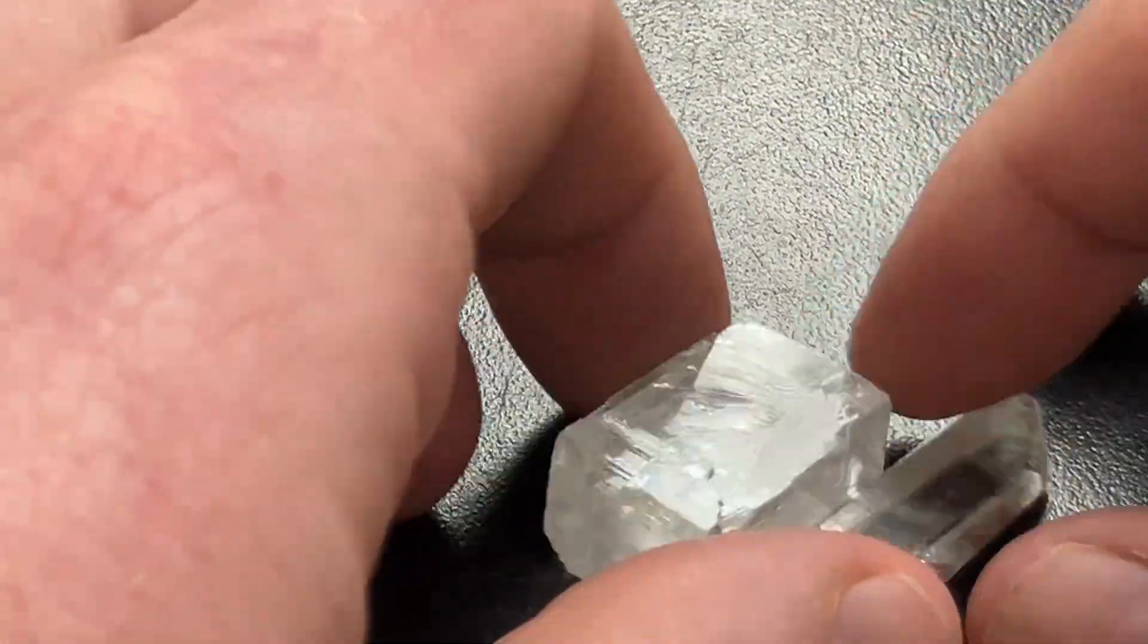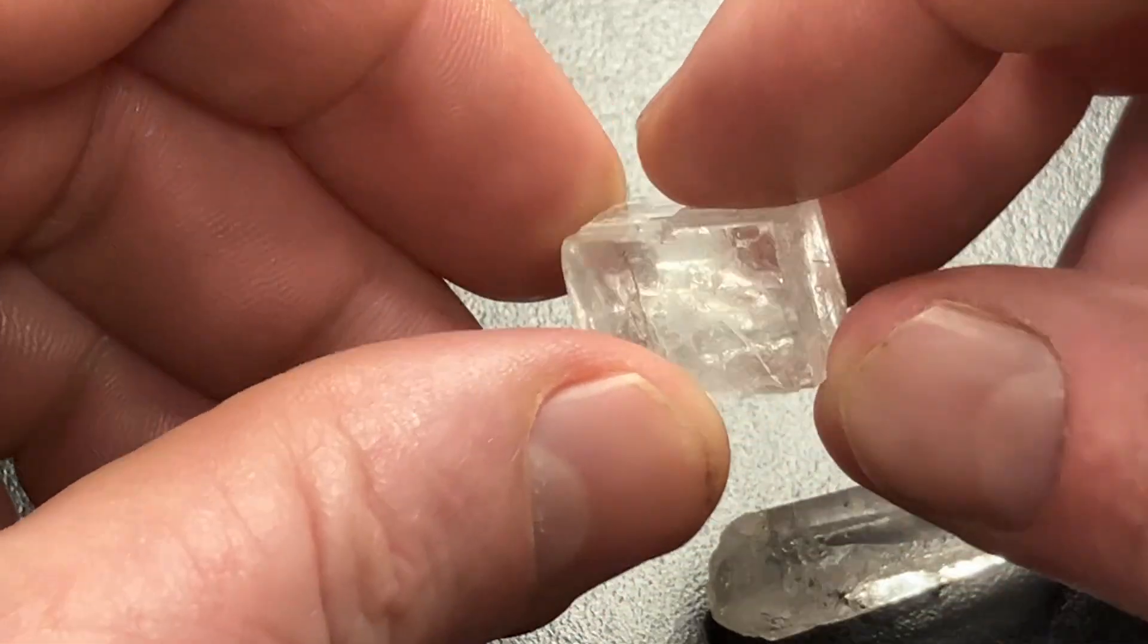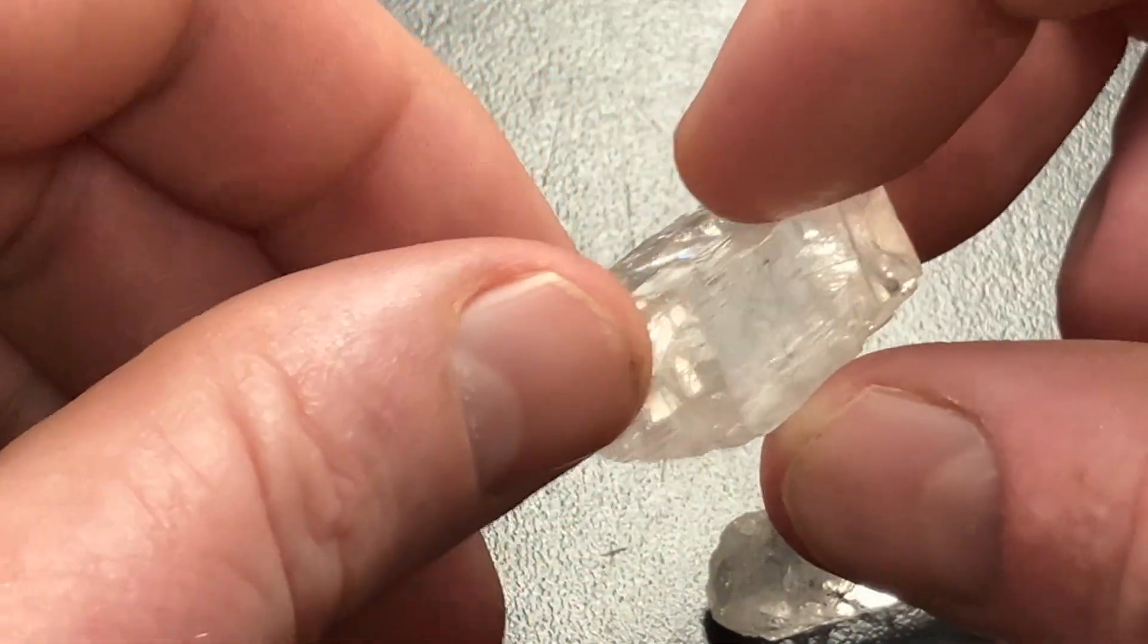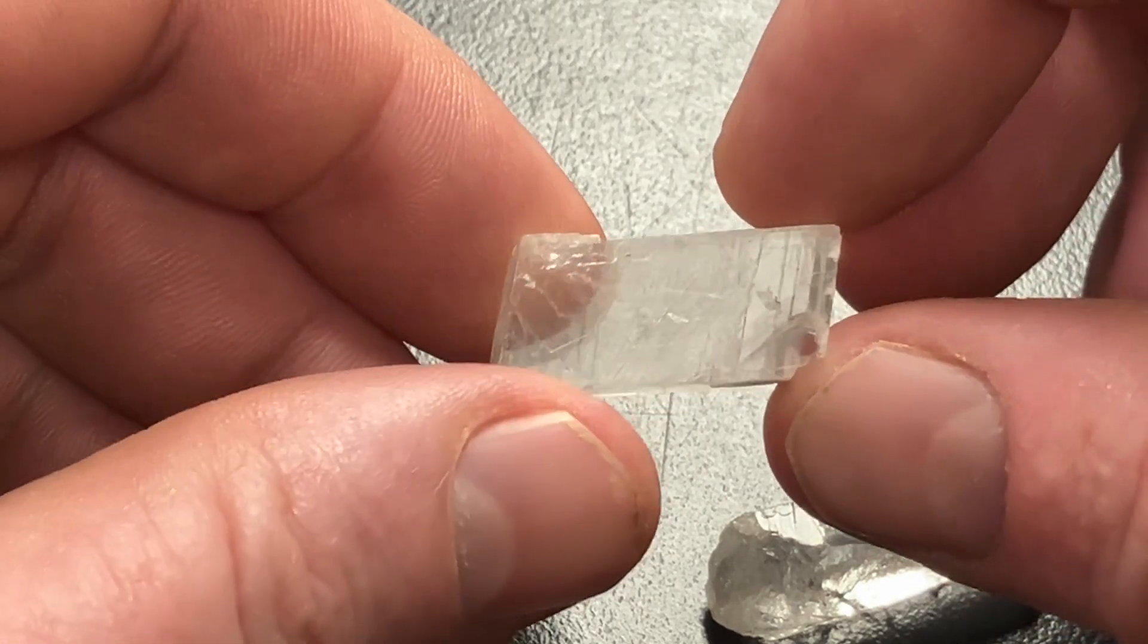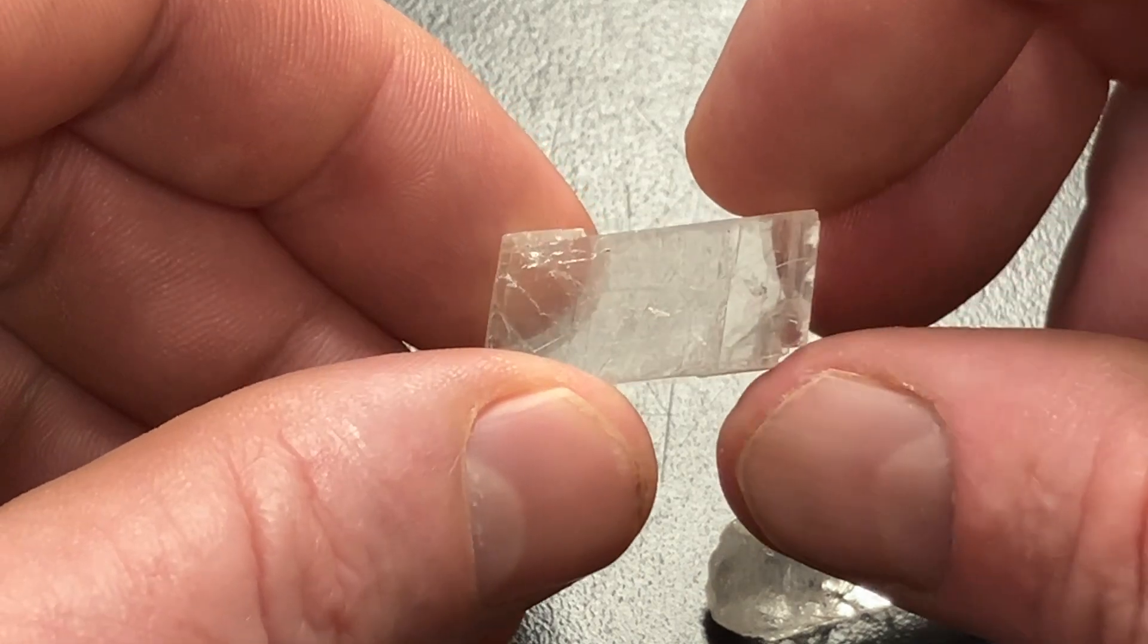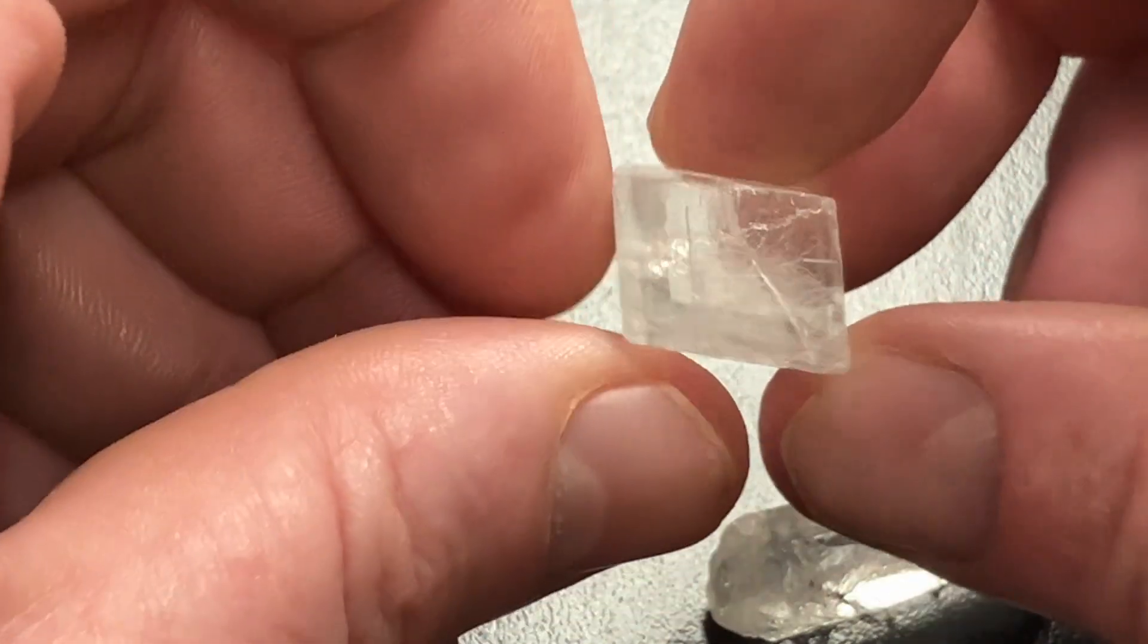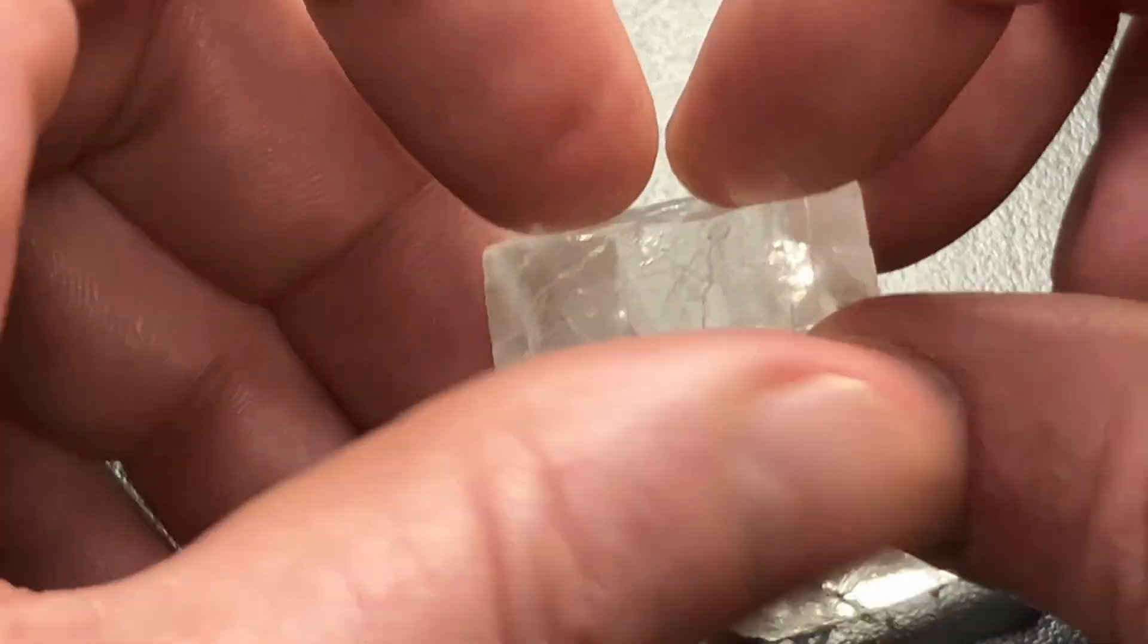One is about the cleavage. We have cleavage in three directions here, non-90 degrees. So, you basically have a trapezoidal-shaped crystal. This is the calcite. It's got a nice trapezoidal-shaped crystal. No matter which way you hold it, it still looks trapezoidal. No right angles.